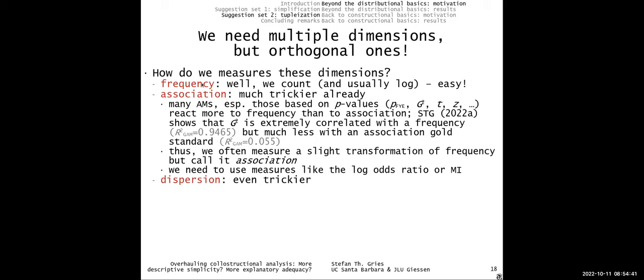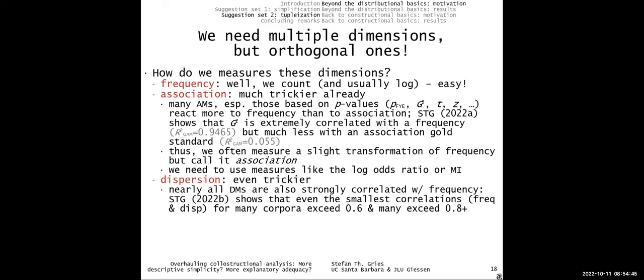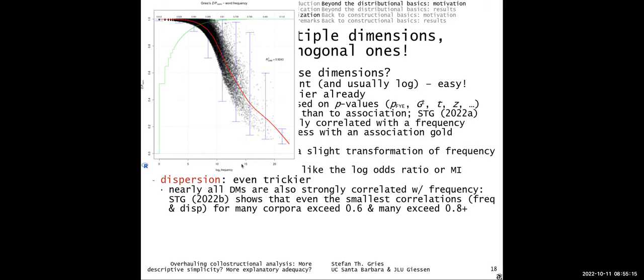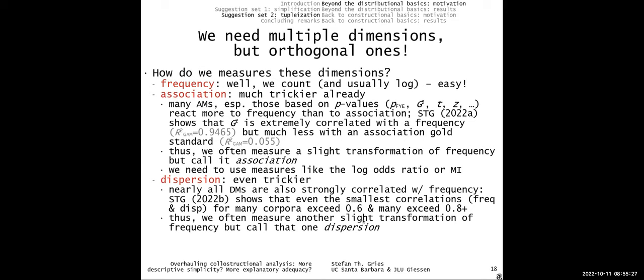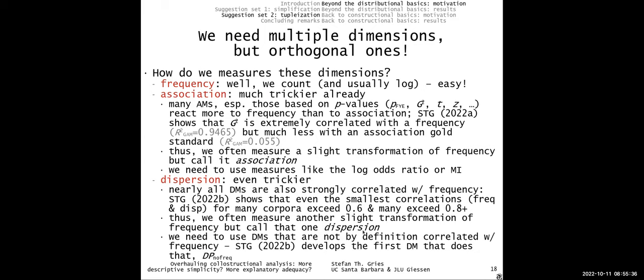In a paper published a few months ago, I showed that log-likelihood — perhaps the most frequently used association measure in all of corpus linguistics — is extremely correlated with frequency but much less with association. What the field has been doing is taking frequency, transforming it ever so slightly, and calling it an association measure — when it doesn't actually measure association. The same problem applies to dispersion: most dispersion measures are 0.8 or higher correlated with frequency. We're essentially just measuring frequency again.